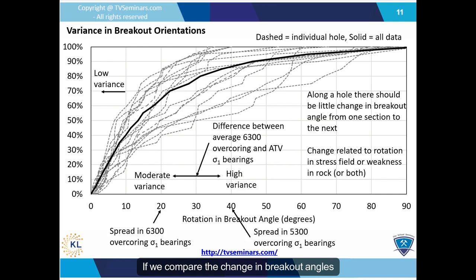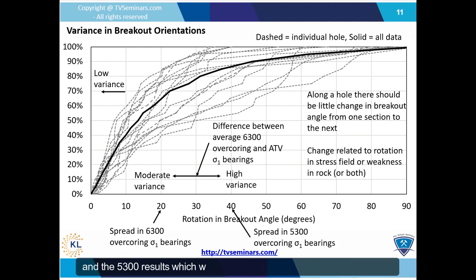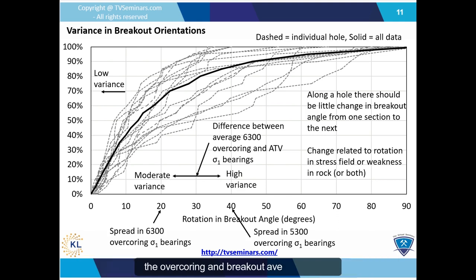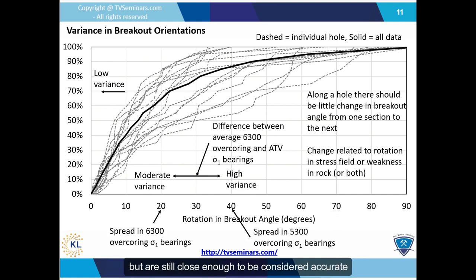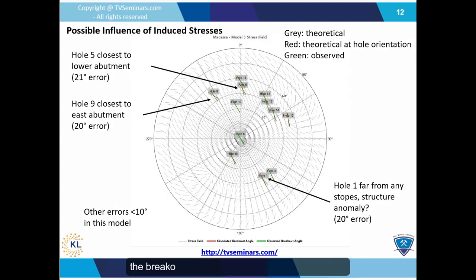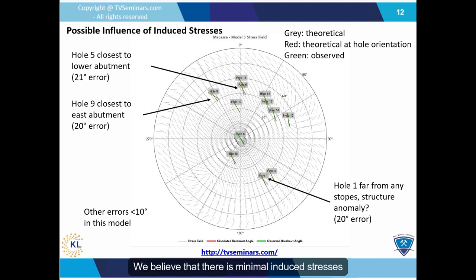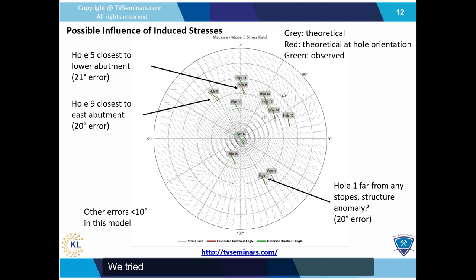If we compare the change in breakout angles to the spread in the overcoring results, the 6,300 results had moderate variance, and the 5,300 results, which were near a major structure, had high variance. When we compare the difference between the overcoring and breakout average results, the overcoring results may have been a bit off, but are still close enough to be considered accurate. One factor we considered was that the breakout results could have been influenced by large-scale mining-induced stresses. We believe there are minimal induced stresses a couple thousand feet into the hanging wall of the O4 break where the SMC is located, and we tried to survey far enough away from the SMC along strike so results would not be affected.